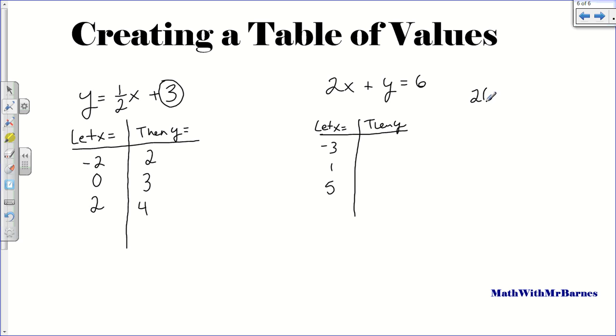So all I do, 2 times negative 3 plus y is equal to 6. And then that's negative 6 plus y is equal to 6. So then I add 6 to both sides, add 6, add 6. And I get y is equal to 12. So there's my first point.